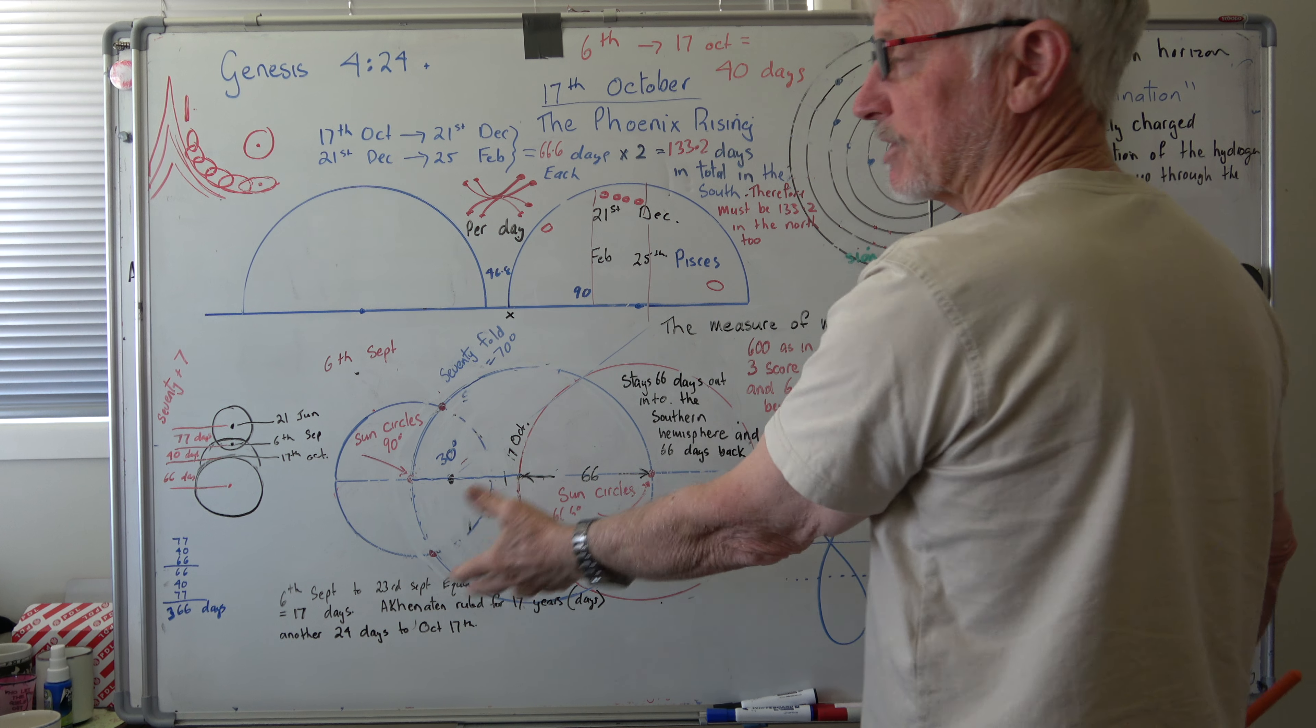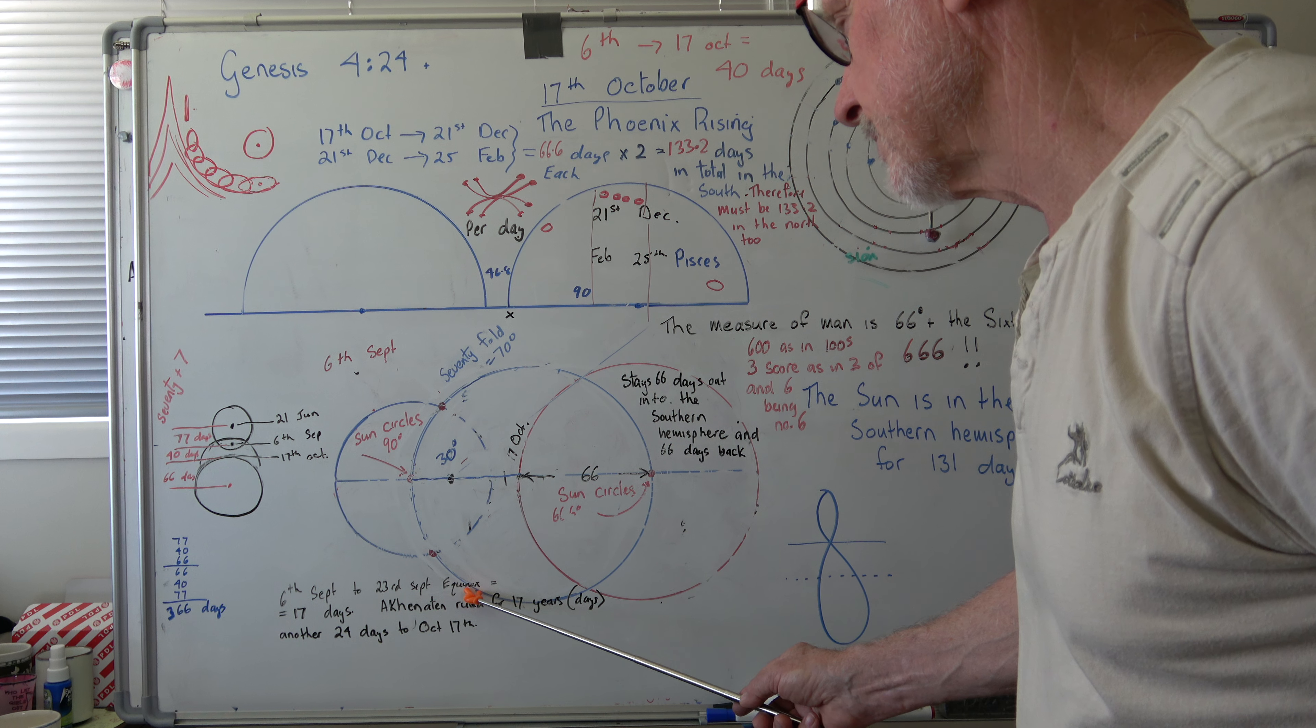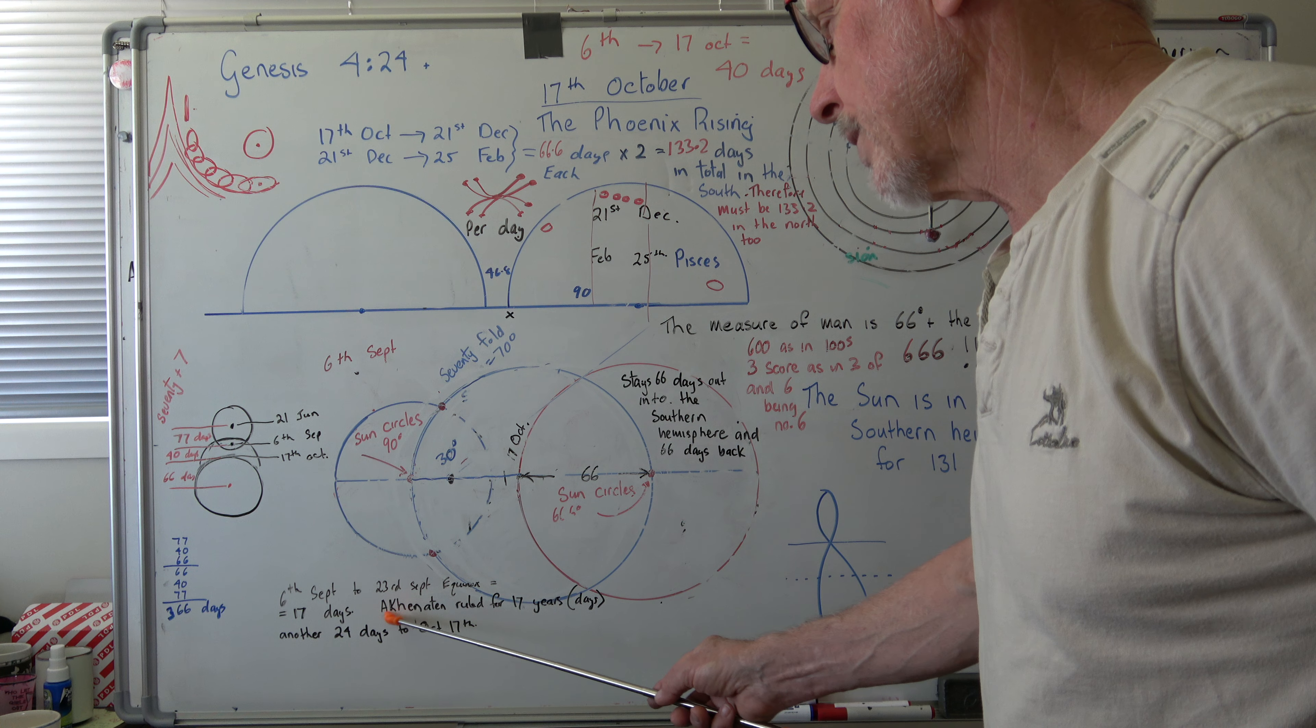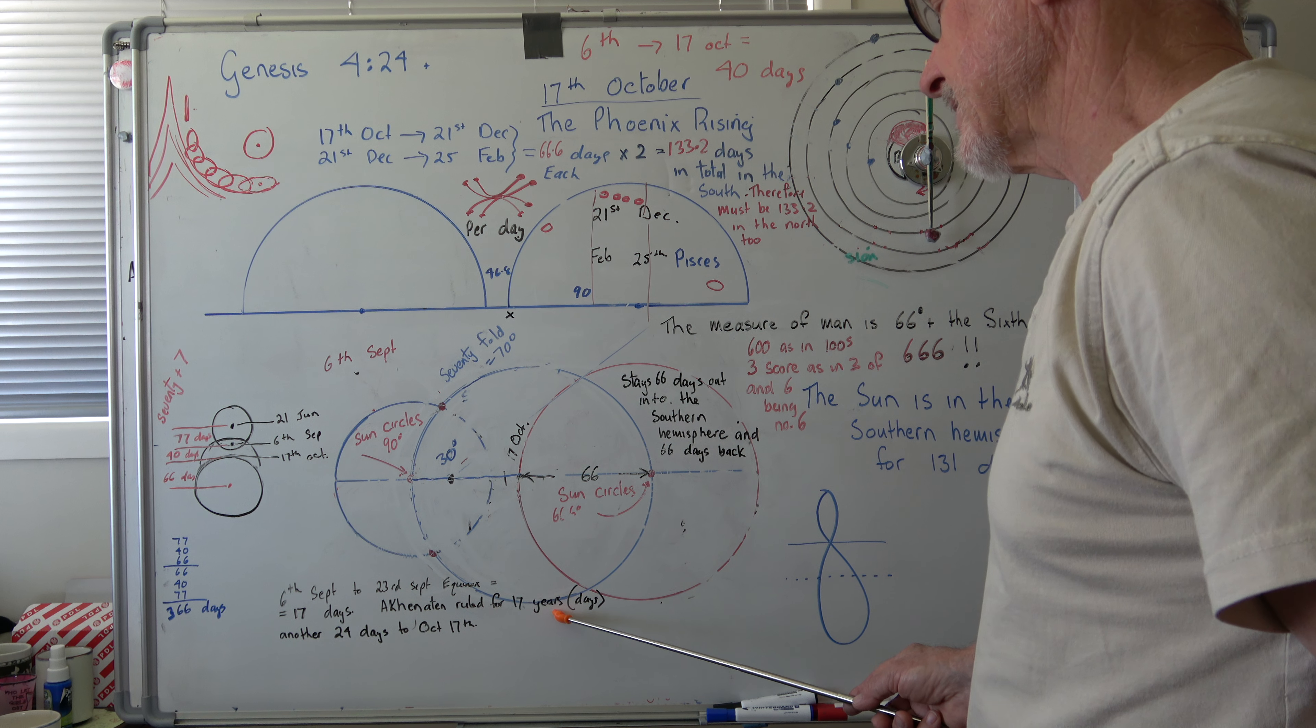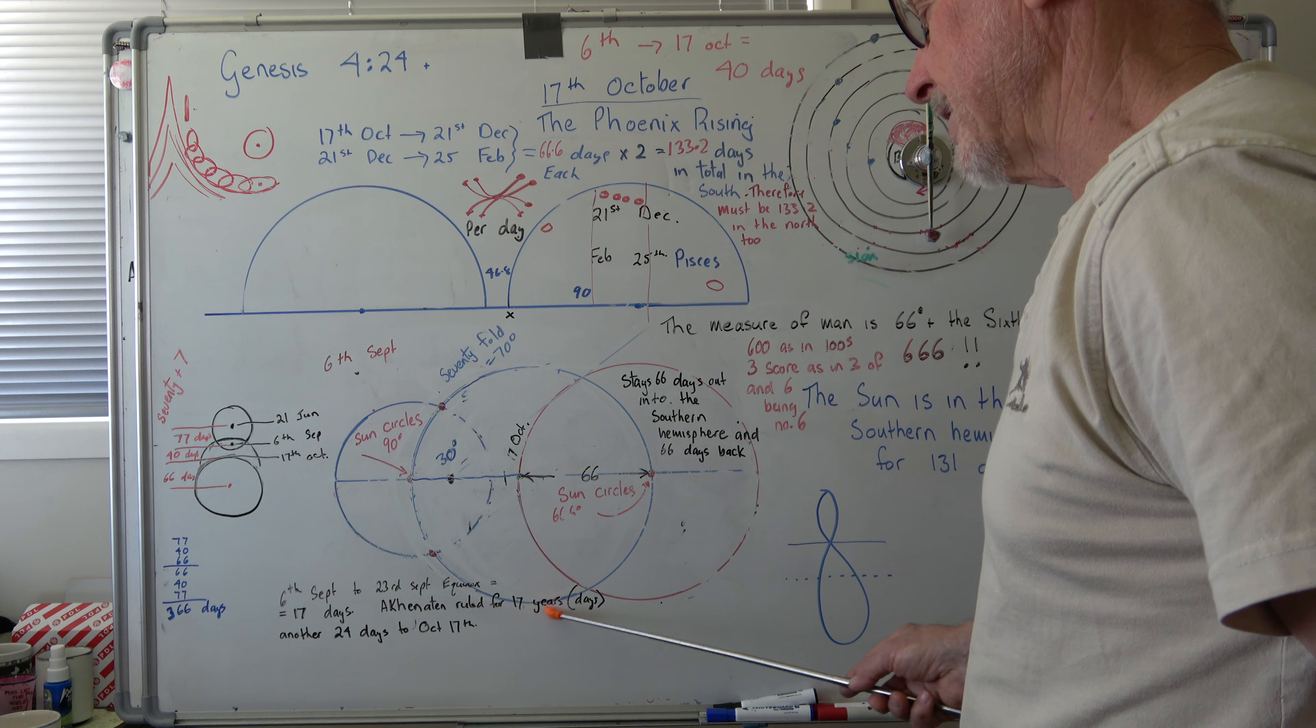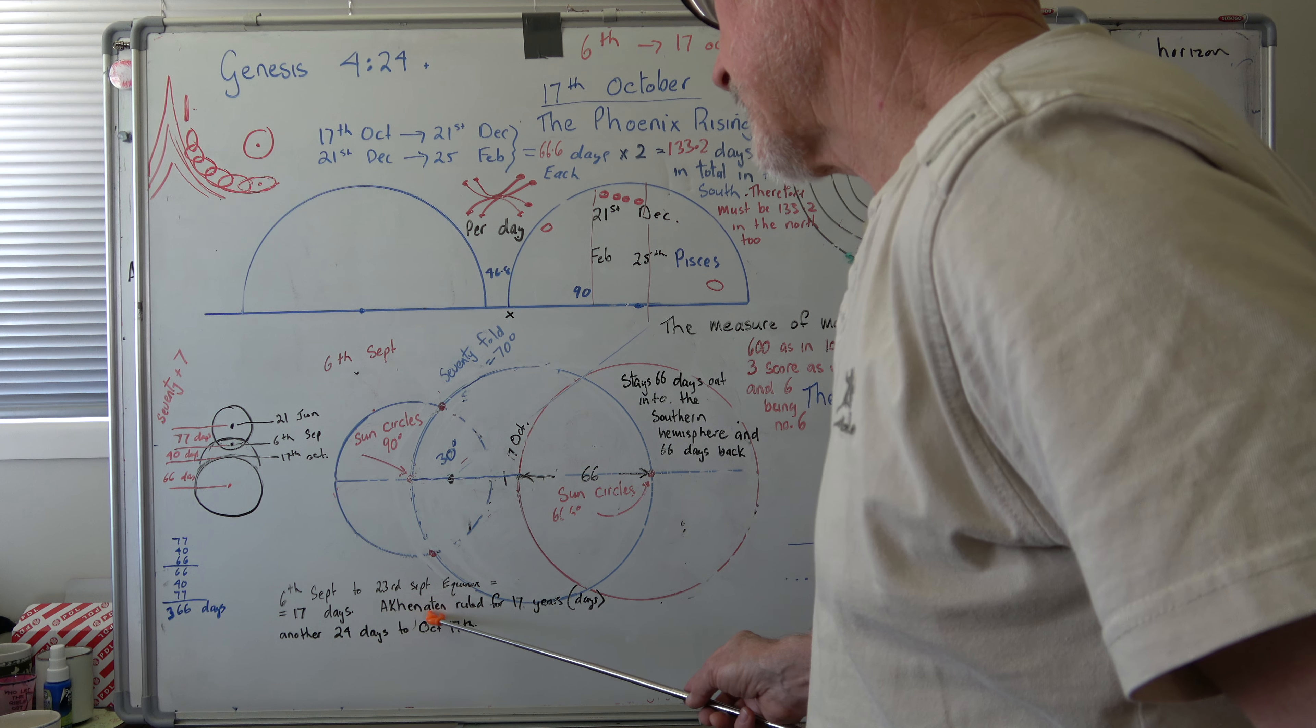6th of September to the 23rd of September equinox—17 days. 17 days is mentioned a lot in the Bible, one in ancient Egyptian stories. Akhenaten ruled for 17 days, but it says years, but it's days.